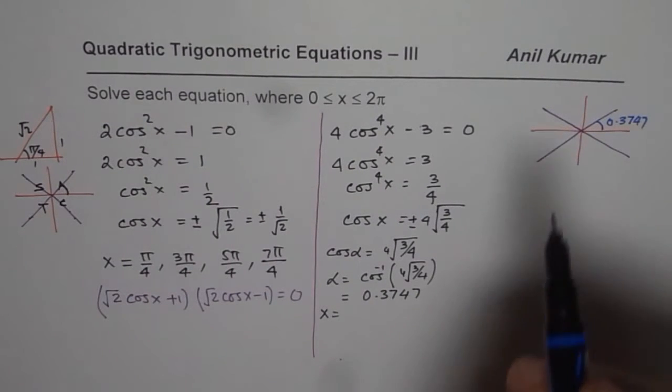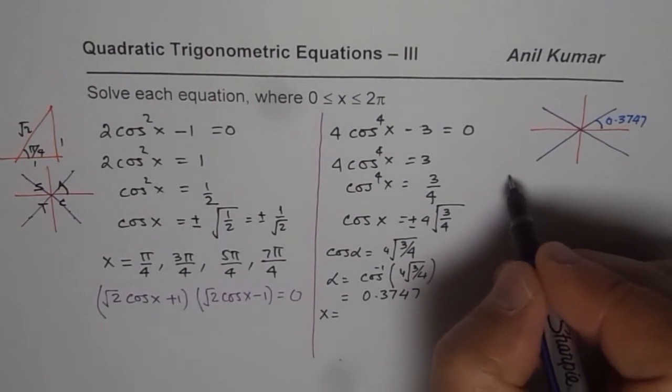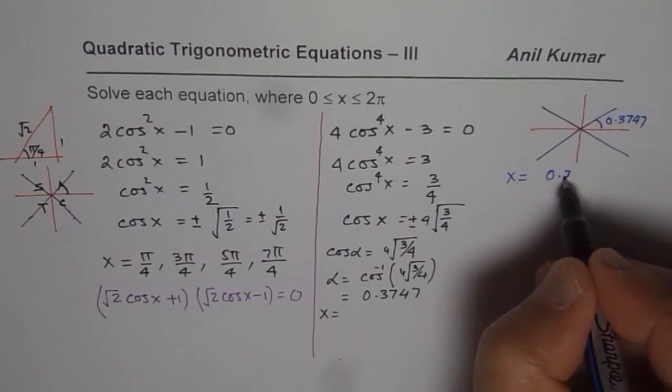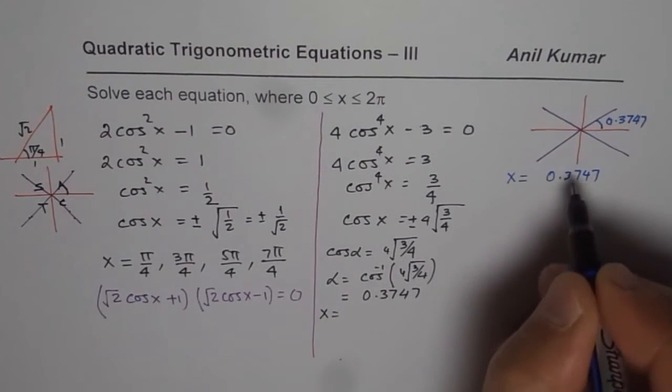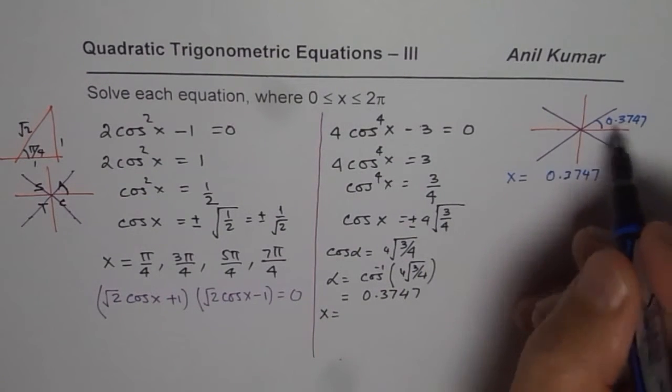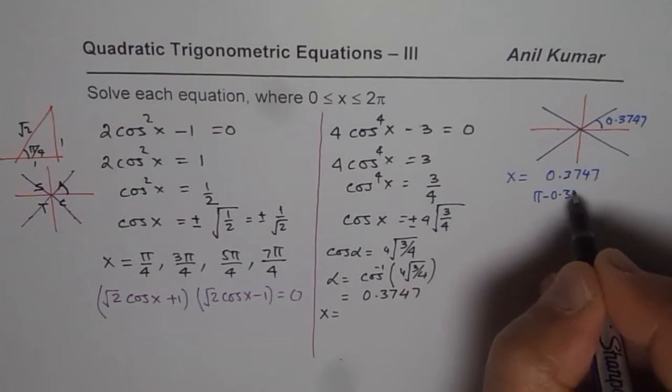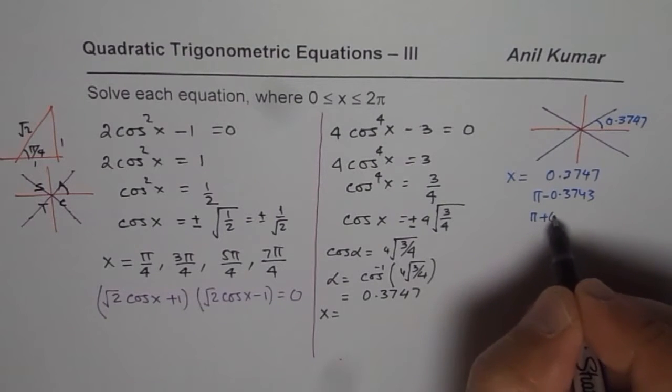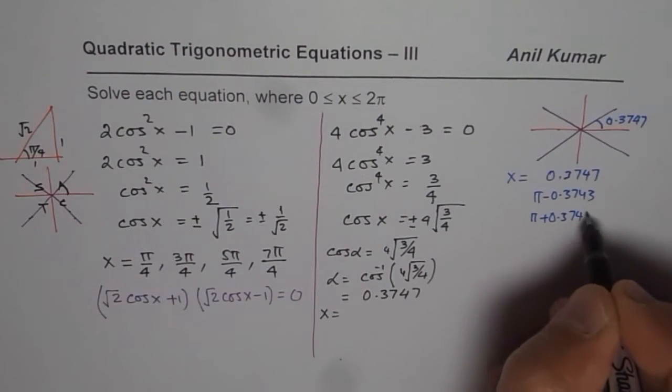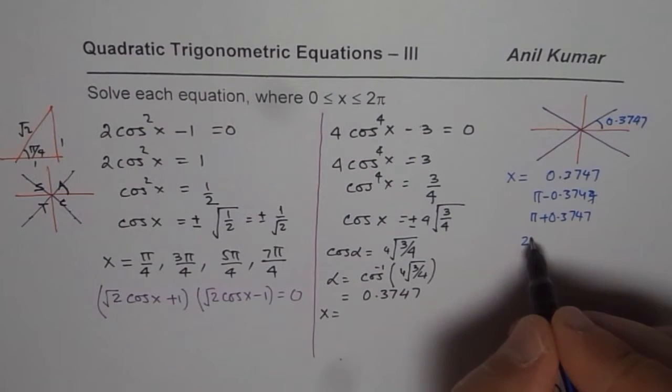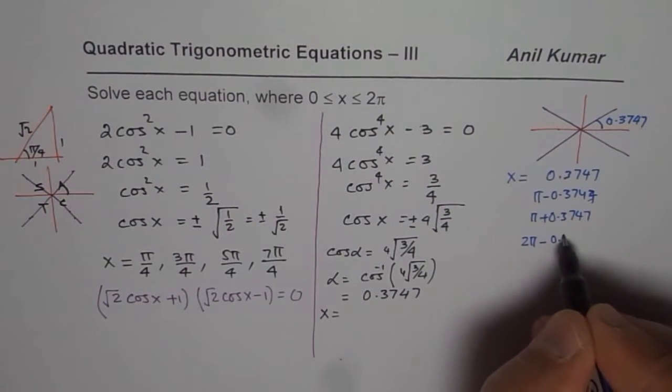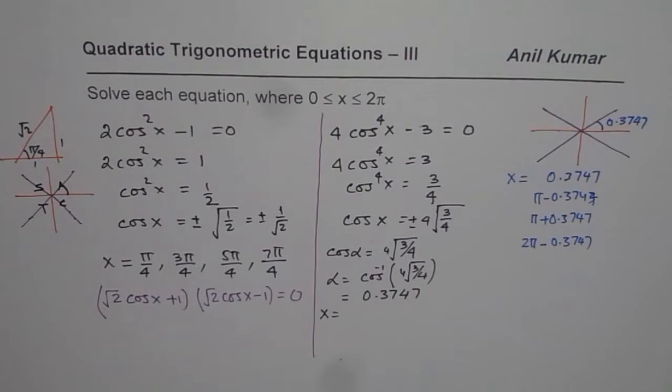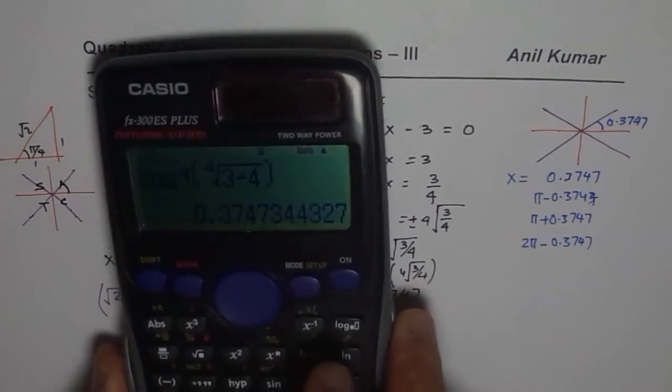The 4 solutions are x = 0.3747. The other one will be π - 0.3747. And then we have π + 0.3747. And then we have 2π - 0.3747. All these values are our solutions. So let's do it.